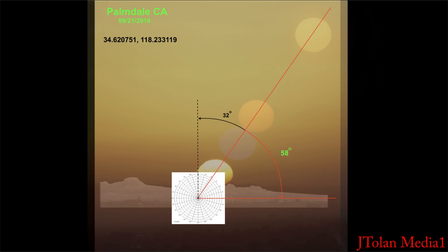I took a few screen grabs from the clip you just saw and superimposed them and drew a line through them. Notice the angle is about 58 degrees to the horizon and 32 degrees measured to the vertical which is fairly close to the 34.6 degree latitude.